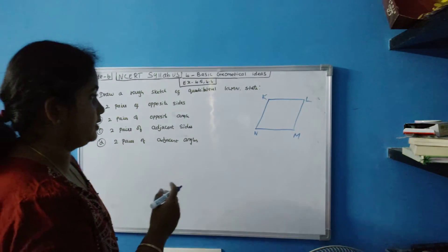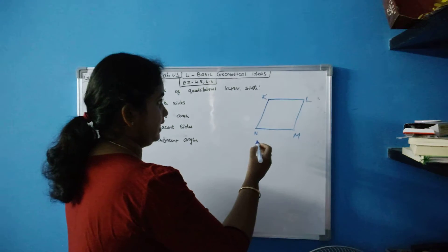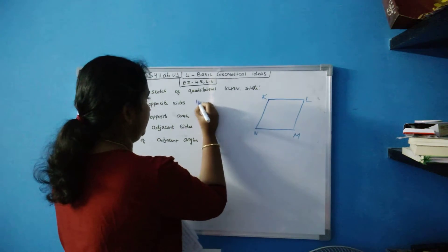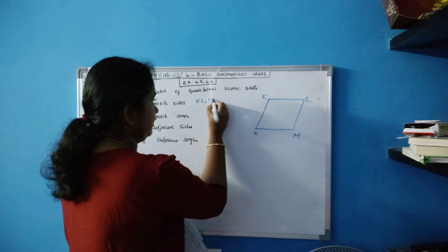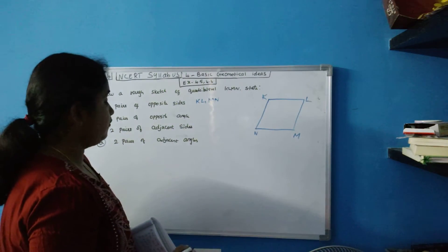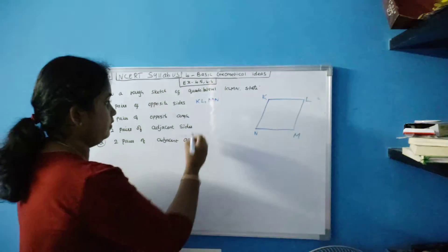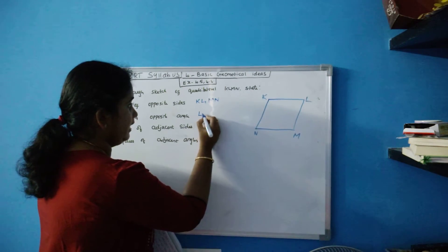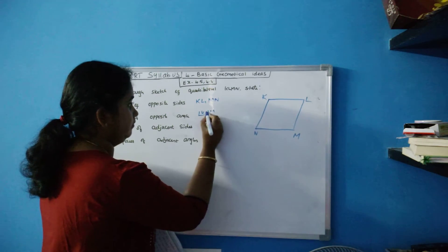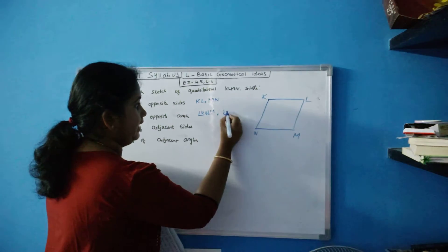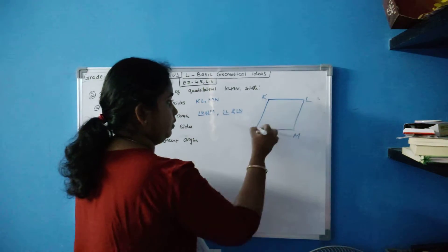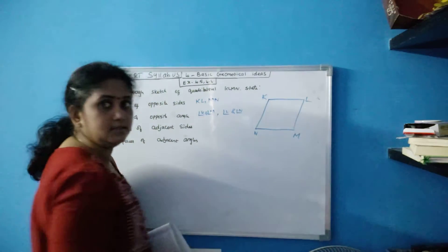Two pairs of opposite sides: KL and MN are one pair. Two pairs of opposite angles: angle K and angle M are one pair, and angle L and angle N are another pair. These two are opposite angles and these two are opposite angles.